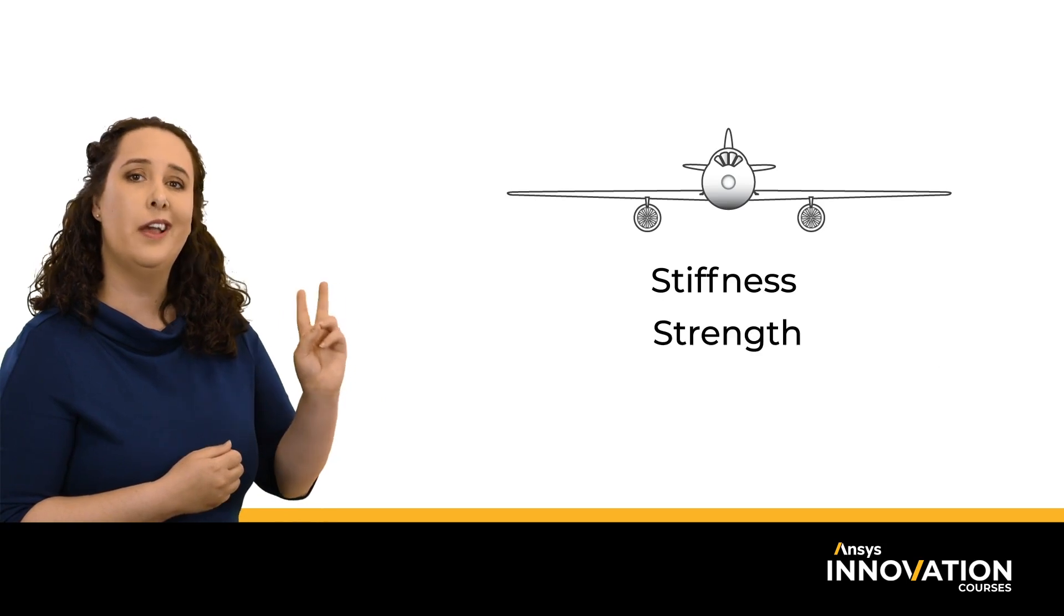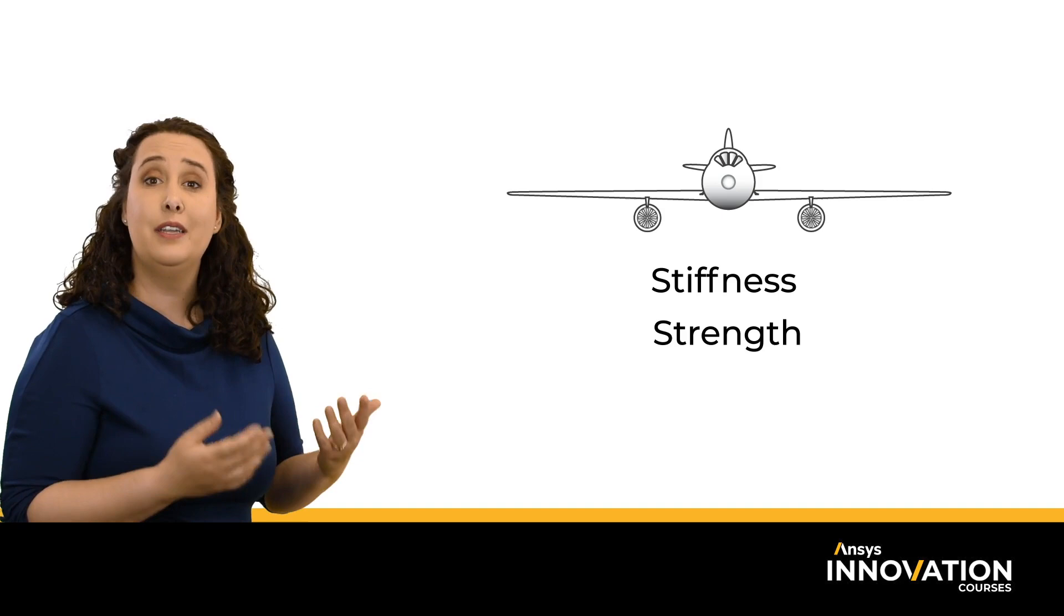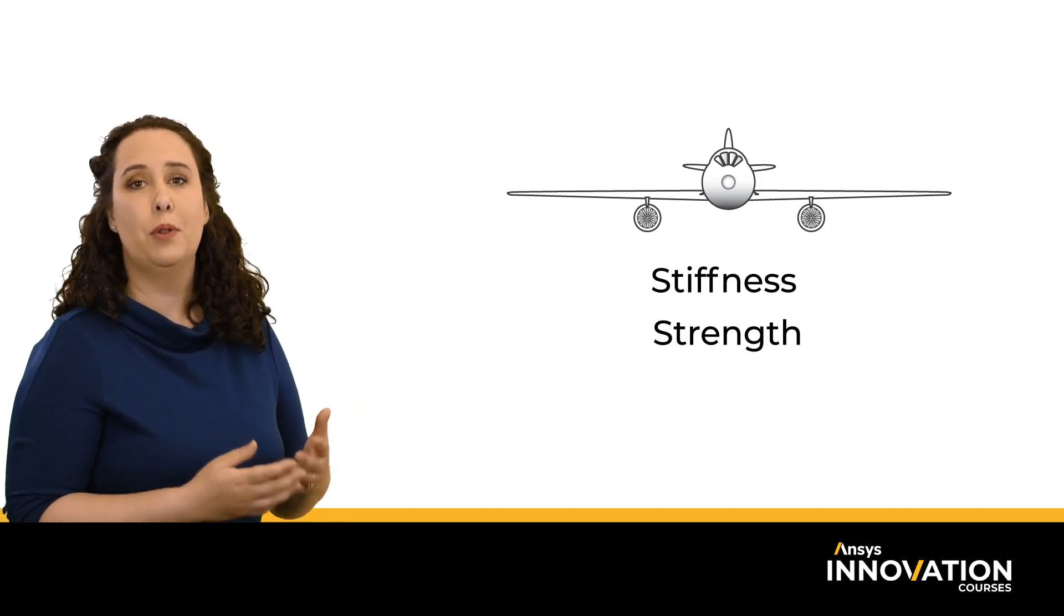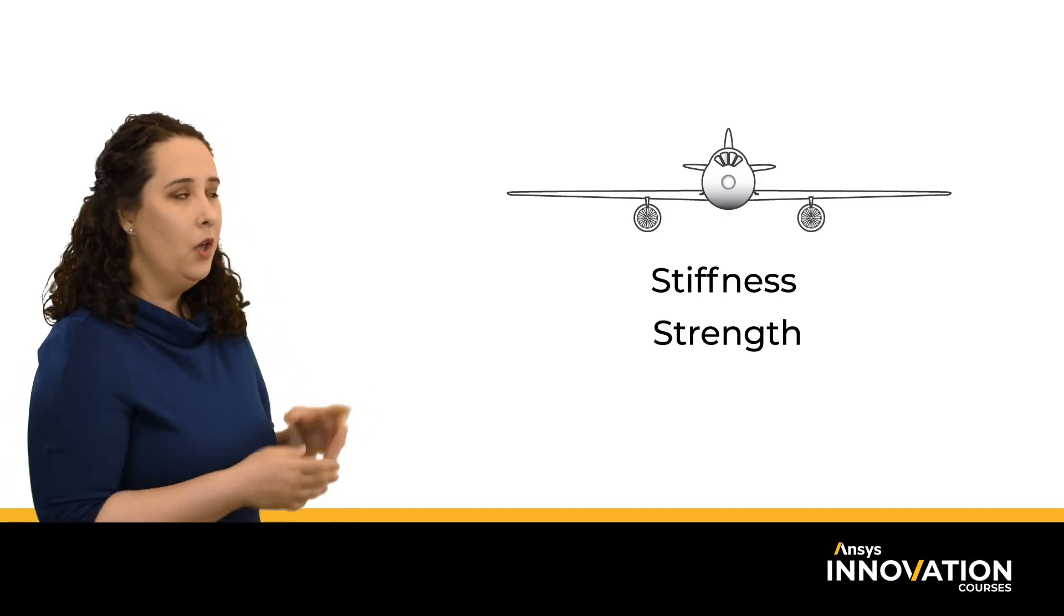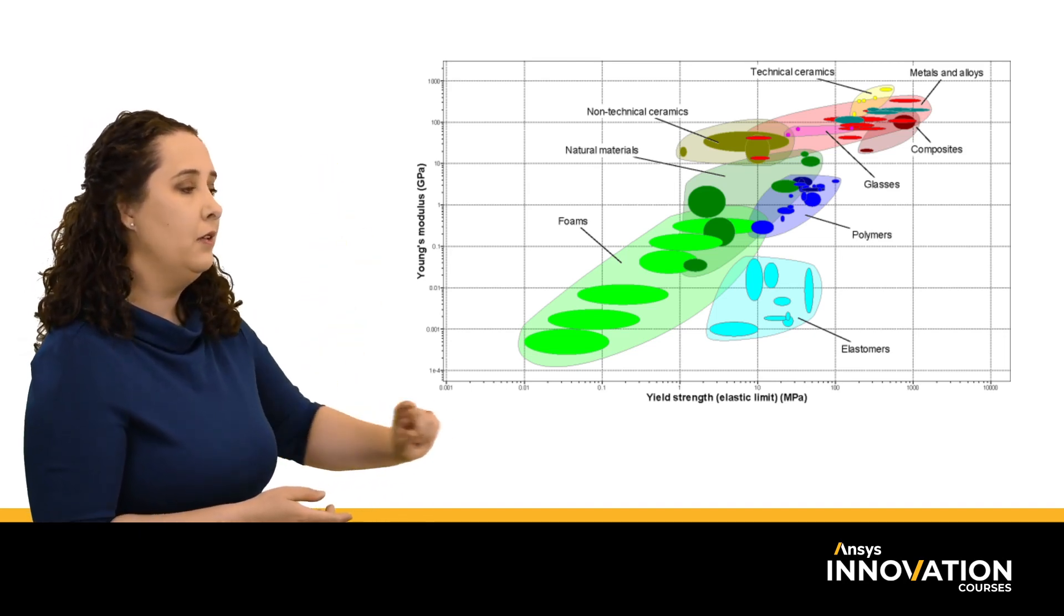So to start this material selection, let's consider our first two design criteria: stiffness and strength. We're going to use Young's modulus to represent stiffness and yield strength to represent strength when plotting on our Ashby charts. We've done so here, where I have Young's modulus on the Y and yield strength on the X.